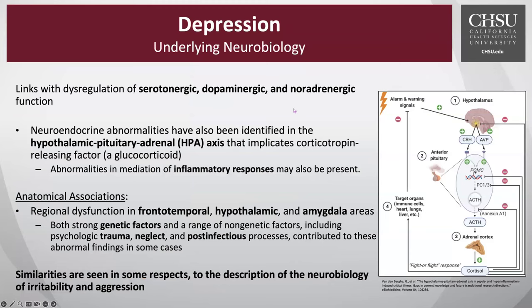If we look at the underlying neurobiology of depression, it won't surprise you that we see links and dysregulation of serotonergic, dopaminergic, and noradrenergic function. Interestingly, we also see neuroendocrine abnormalities with the hypothalamic-pituitary-adrenal axis, or HPA axis, implying dysfunction perhaps in glucocorticoids or corticotropin-releasing factor. Depression is often associated with inflammation — people with inflammatory disorders tend to get depressed, and depressed people tend to have elevated inflammatory cytokines. We see anatomical associations with dysfunction in the frontotemporal, hypothalamic, and amygdala areas, along with genetic factors as well as environmental factors including trauma, neglect, and post-infectious processes.